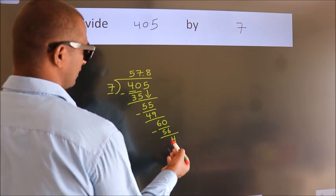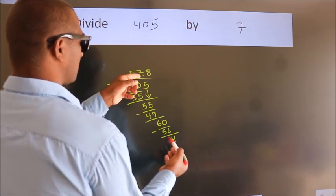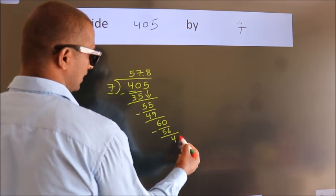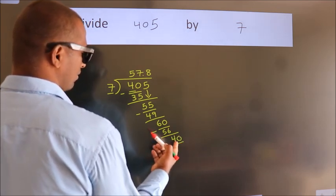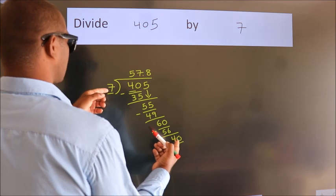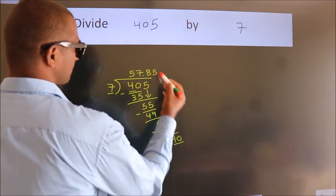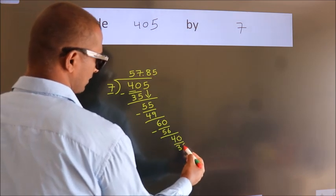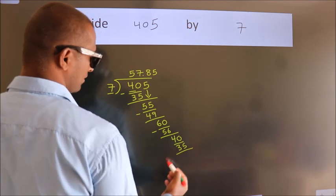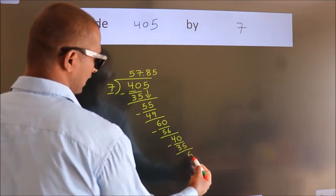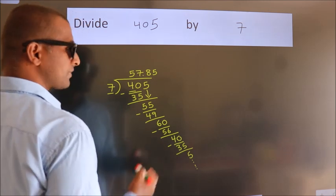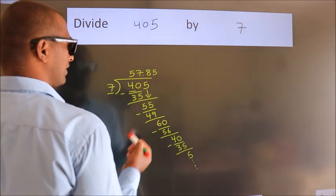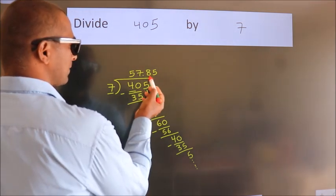After this, we already have the decimal, so directly take 0. So 40. A number close to 40 in the 7 table is 7 fives, 35. Now we subtract, we get 5. And you continue the division. It is enough if we do up to 2 decimal places.